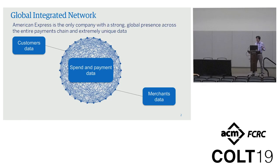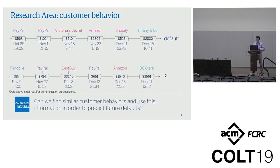We can predict fraud, we can build very interesting models, and we can use the data in completely different ways. During this talk I want to tell about some practical stuff that we are doing. The first example is a research project we are doing inside American Express. Let's say we have a sequence of transactions — the data shown are not real, but we have terabytes of such data.